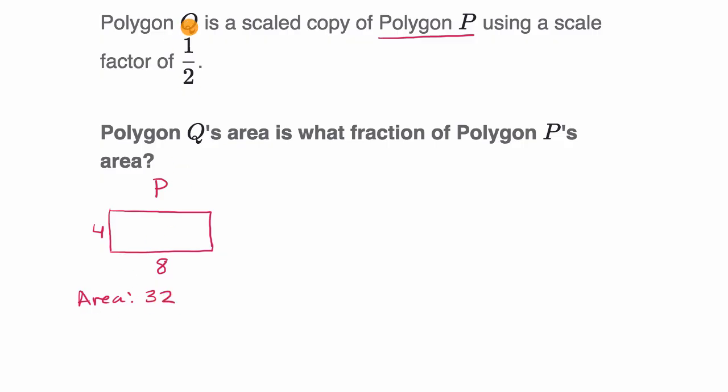Now let's create polygon Q. Remember, polygon Q is a scaled copy of P using a scale factor of one half. So we're gonna scale it by one half. So instead of this side being four, it's going to be two. And instead of this side over here being eight, the corresponding side in the scaled version is going to be four. So there you go, we've scaled it by one half.